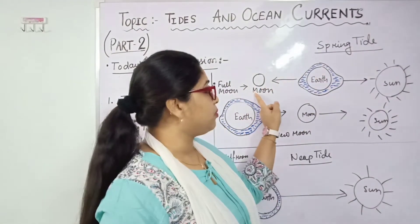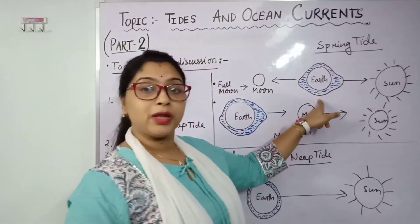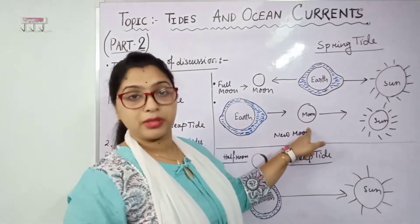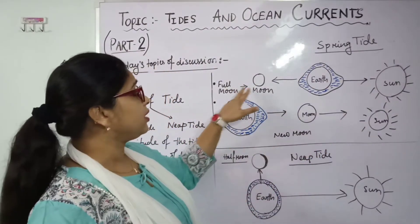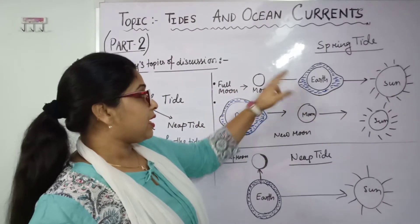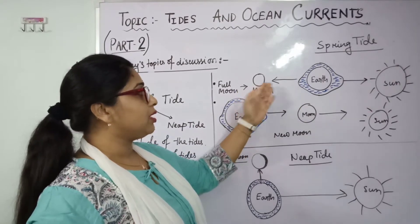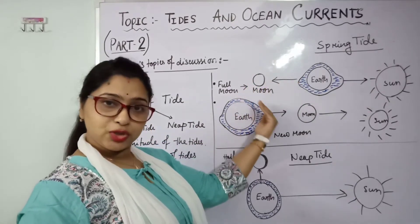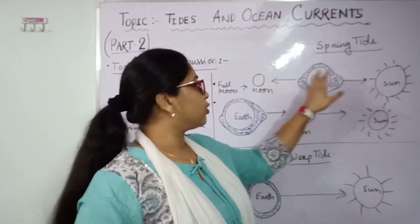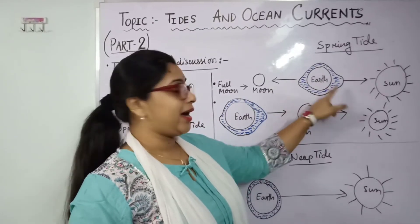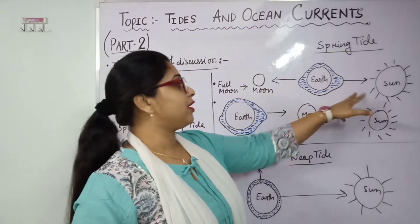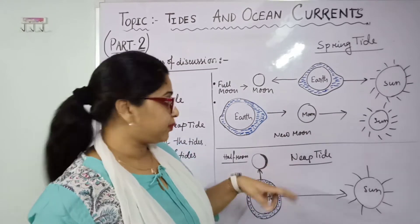In the full moon, the moon and sun have earth in between them. In the new moon, the moon is between earth and sun. In the full moon case, the moon attracts water by gravitational pull, causing bulging on that side, and the sun causes rising on the other side. So both sides have high tide and the rise of the water will be more.